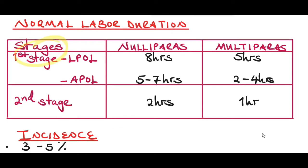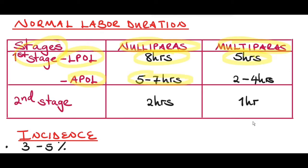The first stage of labor is divided into two phases. The first phase is called the latent phase of labor, which is from the onset of contractions to three centimeters dilatation of the cervix. The active phase of labor is from four centimeters dilatation to full dilatation. The latent phase should last about eight hours in nulliparous women and five hours in multiparous women. The active phase should last about five to seven hours in nulliparous women and two to four hours in multiparous women. The second stage of labor should last about two hours in nulliparous women and about one hour in multiparous women.